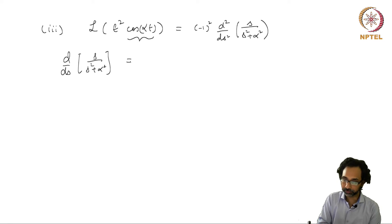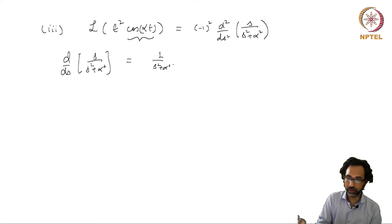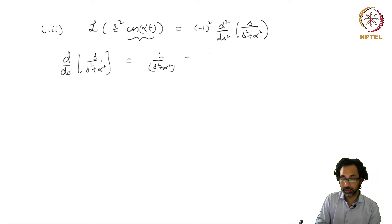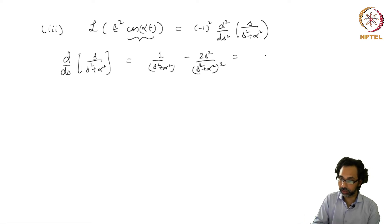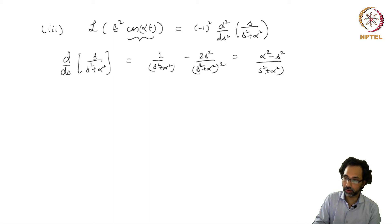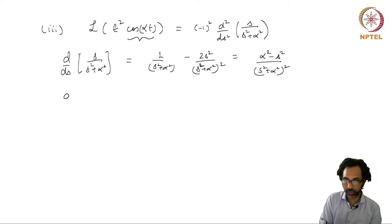The first derivative of s/(s²+α²) is: 1/(s²+α²) minus 2s²/(s²+α²)², which equals (α²-s²)/(s²+α²)². Now we have to differentiate it once more, taking the derivative of (α²-s²)/(s²+α²)².